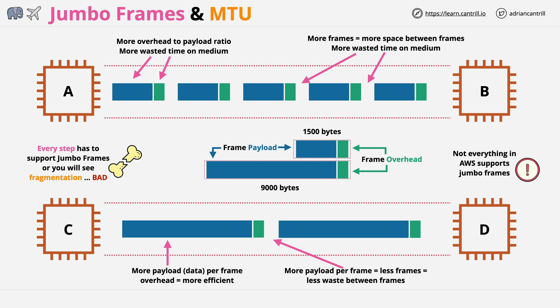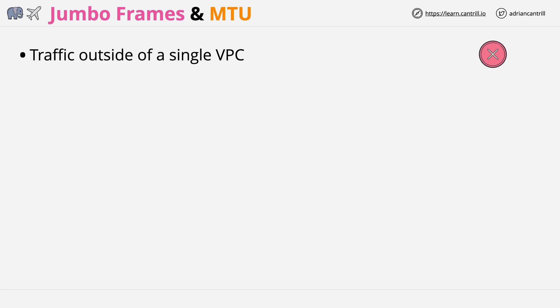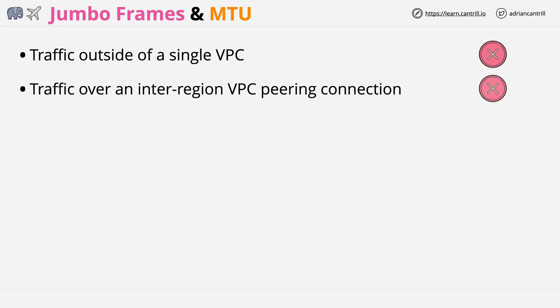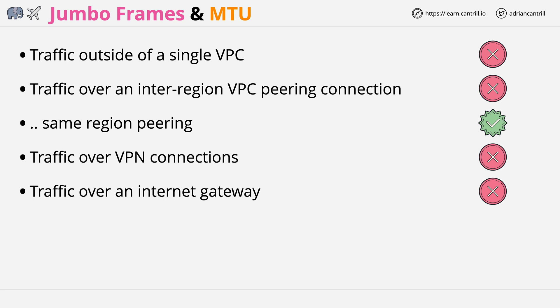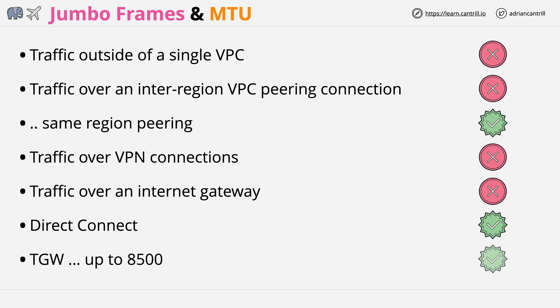Let's step through areas of AWS which do and don't support jumbo frames. Any traffic outside of a single VPC does not support jumbo frames. Traffic over an inter-region VPC peering connection doesn't support jumbo frames, but same-region VPC peering is compatible. Traffic over a VPN does not support jumbo frames, and neither does traffic using an internet gateway. You are able to use jumbo frames over Direct Connect, and Transit Gateway can support frames larger than usual, but only up to 8,500 bytes.